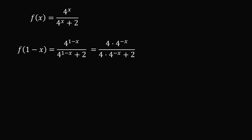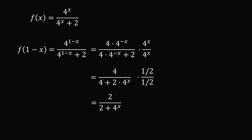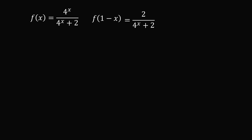First, split up the exponents. Now multiply the numerator and denominator by 4 to the power of x. This simplifies to be 4 divided by 4 plus 2 multiplied by 4 to the power of x. If we then multiply the numerator and denominator by 1 half — effectively dividing through by 2 — we end up with 2 divided by 2 plus 4 to the power of x. Flipping the two terms in the denominator gives exactly the same denominator as f of x. So f of 1 minus x is equal to 2 divided by 4 to the power of x plus 2.